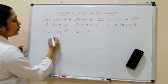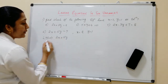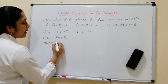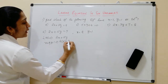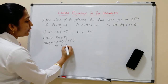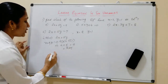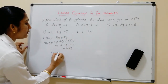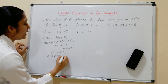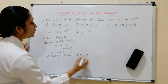Taking LHS, which is 2X plus 5Y, and substituting X equal to 2 and Y equal to 1, we get 2 into 2 plus 5 into 1, which gives 4 plus 5, equal to 9. That equals RHS. So LHS equals RHS, meaning X equal to 2 and Y equal to 1 is a solution of the linear equation 2X plus 5Y equal to 9.